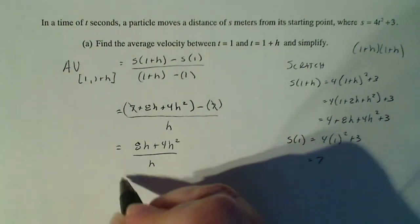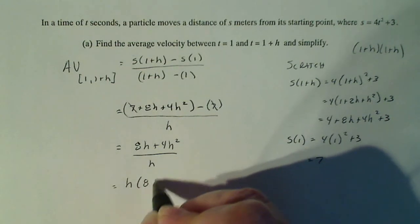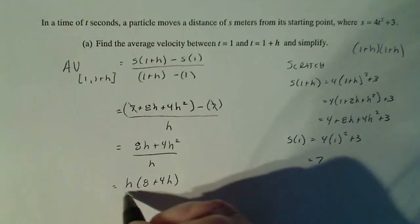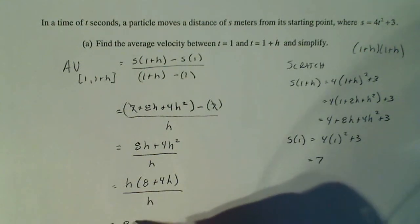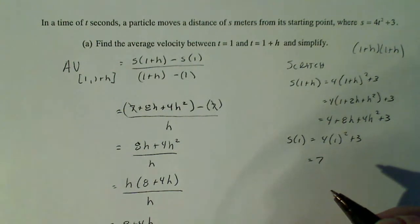And simplifying more, I'm going to factor out an h: 8 plus 4h divided by h. So that leaves me with 8 plus 4h as that result.